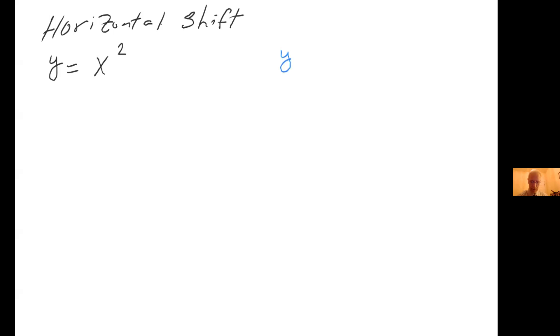Consider y = x², the parent function of the quadratic — the easiest one — versus y = (x − 1)². Most students look at this and their intuition tells them the second one, the blue one, must be shifted to the left one unit. But not so. When they graph it on their calculator or on paper, they notice that actually the graph shifted to the right one unit. How could that be explained?